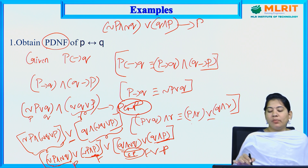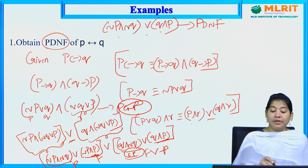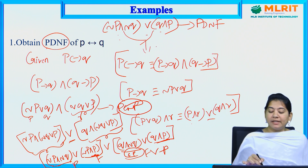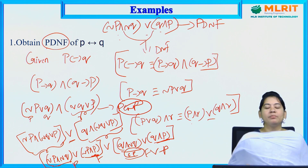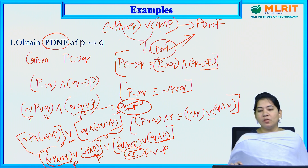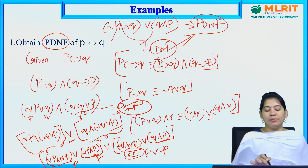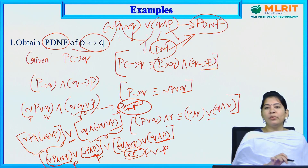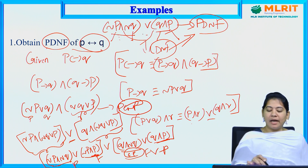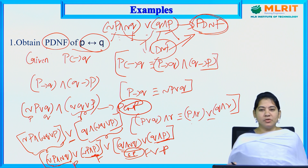So the required PDNF is (¬P ∧ ¬Q) ∨ (Q ∧ P) — this is the sum of min terms. We can also accept this as DNF, because every PDNF is also a DNF. But a DNF is not necessarily a PDNF, because DNF can accept a variable and its negation together, while PDNF cannot. Each min term here contains both variables P and Q, so we can stop here.